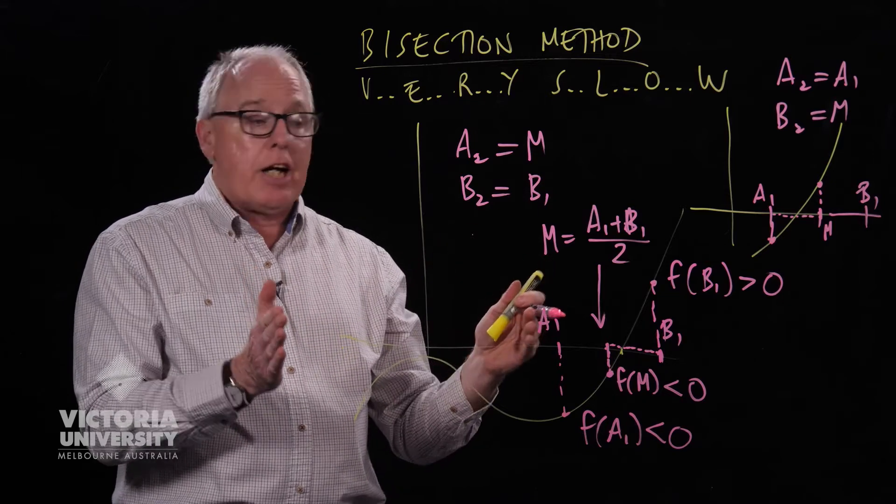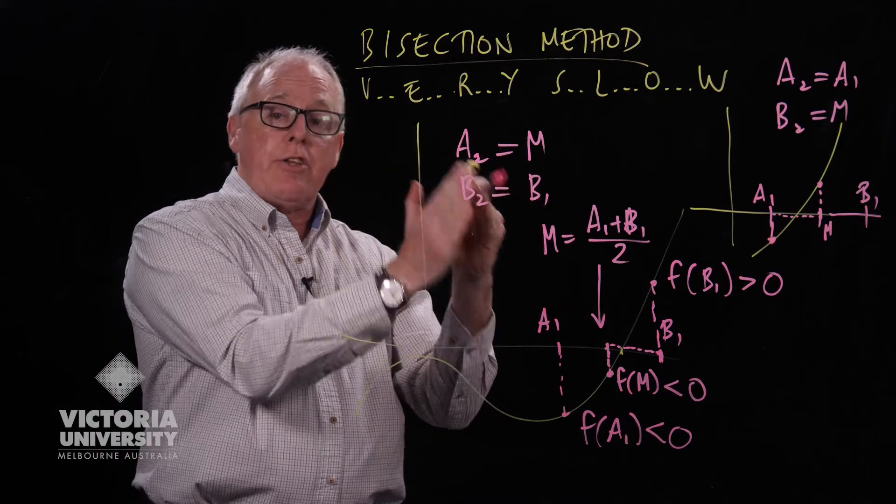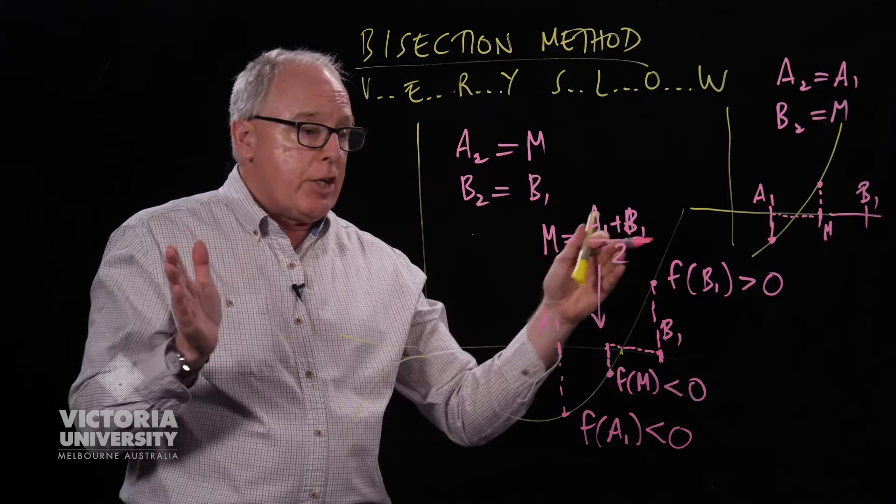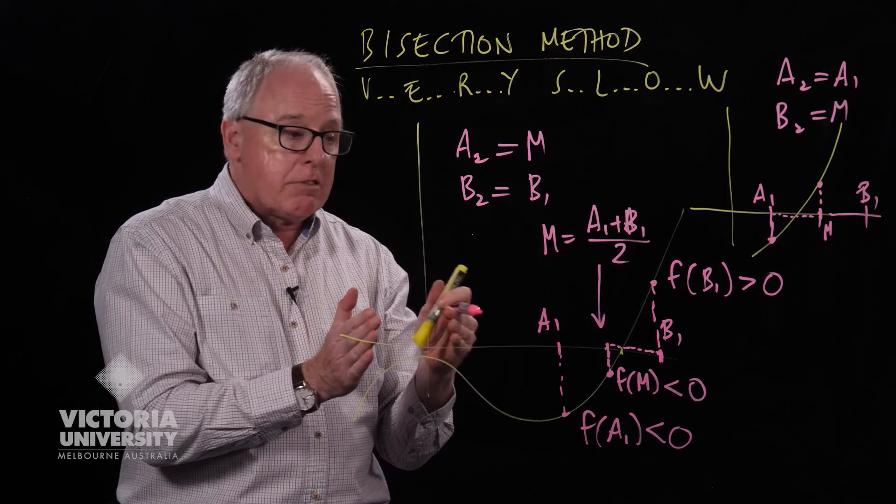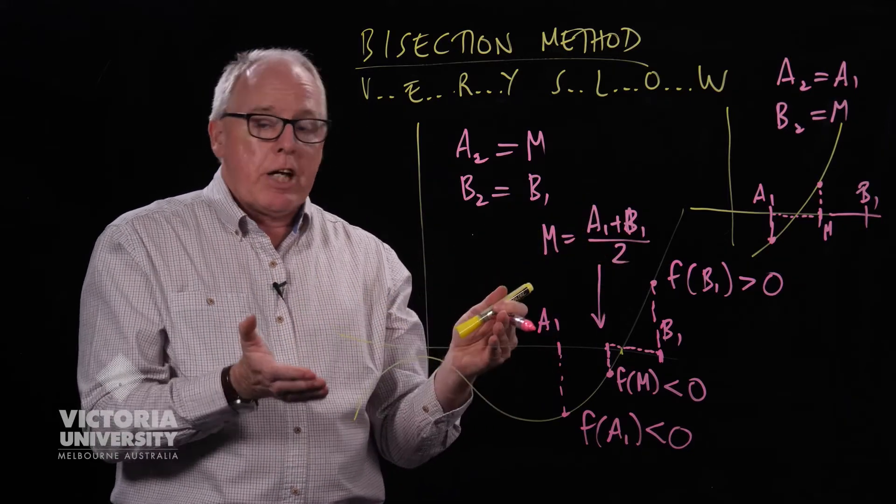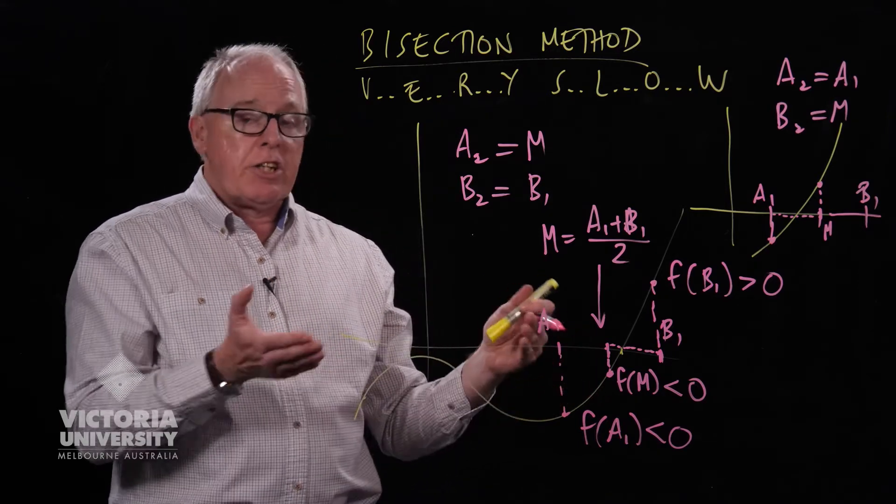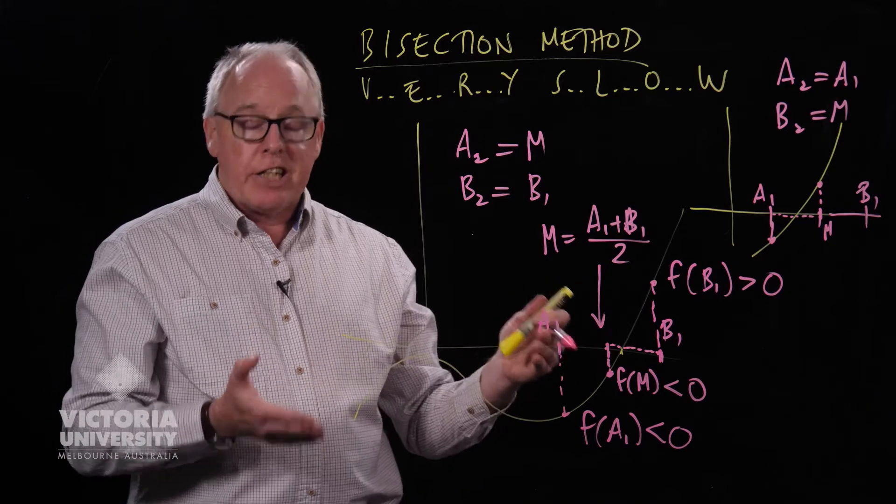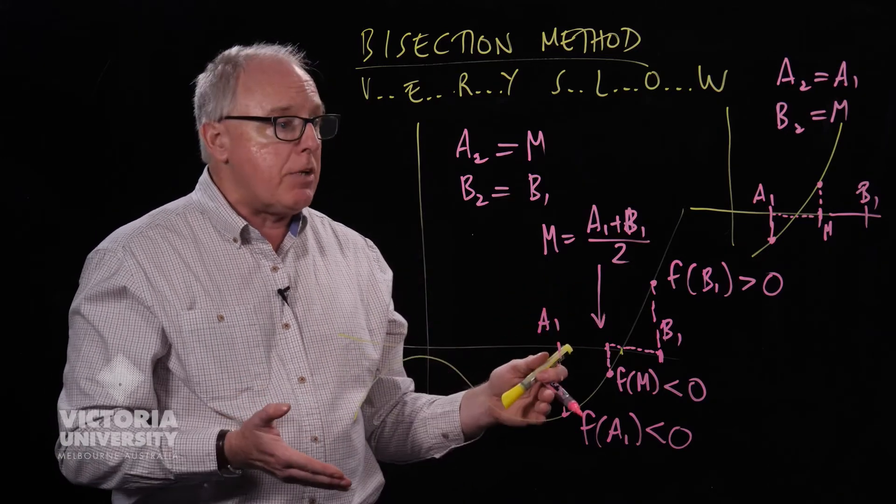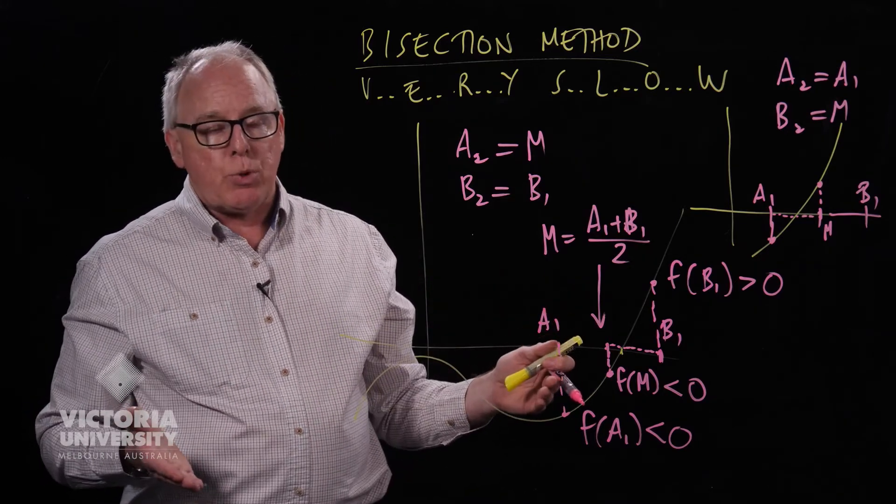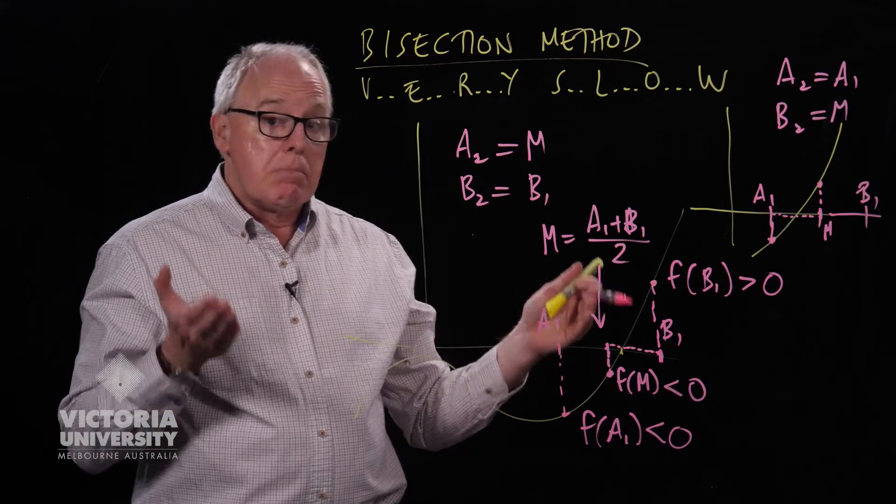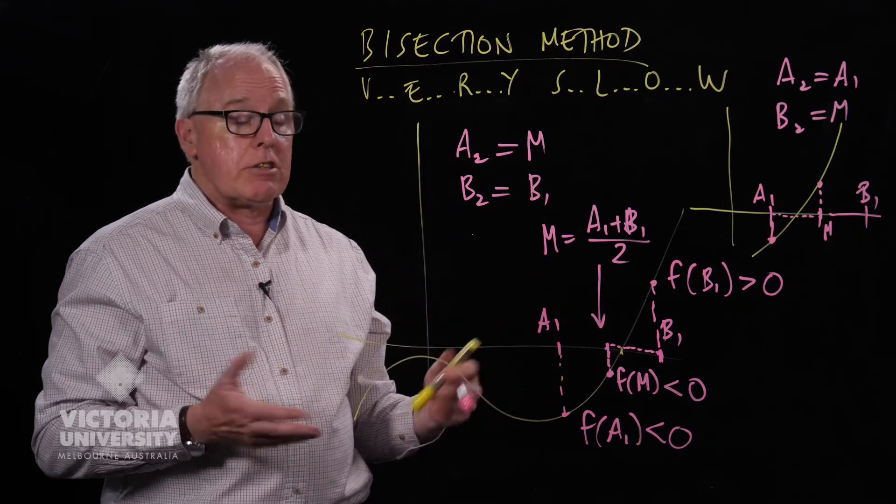This is what the bisection method does, it just keeps on reducing the size of that region. And you have to do it many, many times to get accuracy. Generally, you get one decimal point for every three iterations. So you get to, say, 10 decimal point accuracy, you'd need at least 30 iterations, maybe even more. Whereas Newton's method will get you 30 iterations in maybe two or three iterations if you're lucky.